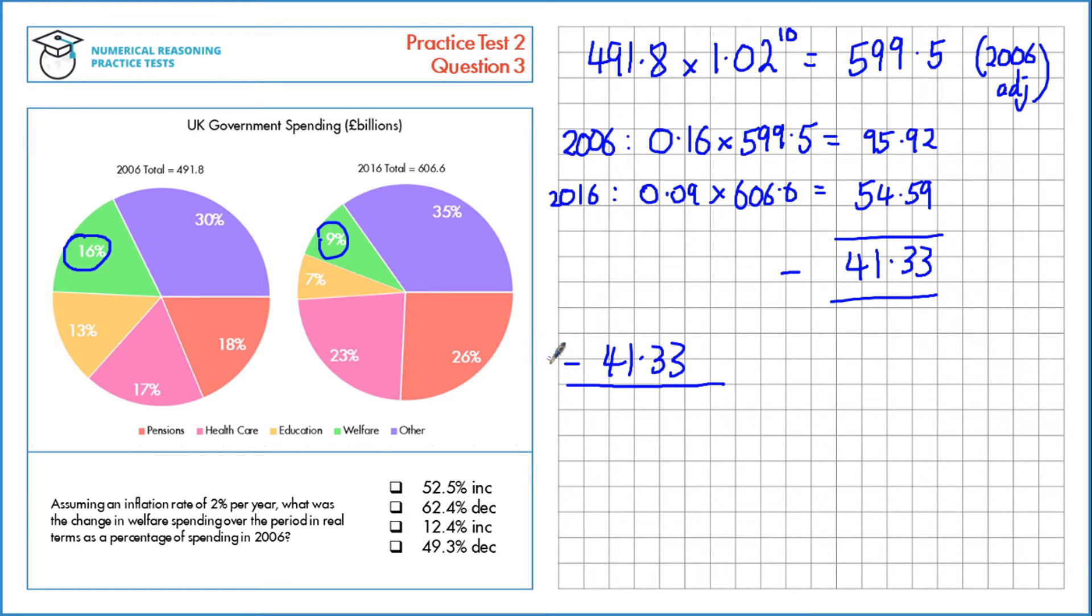We need to divide that by the welfare spending in 2006, the actual welfare spending. That's 16%, which is 0.16, of the total, which is 491.8 billion. Then we multiply by 100 to express the percentage, which gives us a 52.5% decrease, which is answer one.